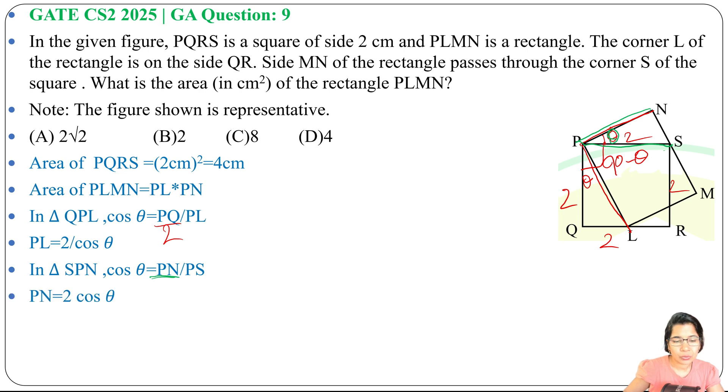Each side of the square is 2 cm, so PN equals 2 cos theta. Now we found PL and PN, these are the length and breadth of the rectangle. Now area of PLMN equals PL.